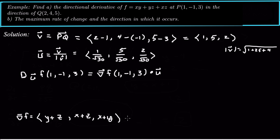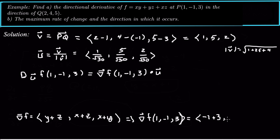Now we evaluate the gradient at the point (1, -1, 3). Plugging in y = -1 and z = 3 gives -1 + 3 = 2 for the first component; then 1 + 3 = 4; and 1 + (-1) = 0. So the gradient at this point is (2, 4, 0).